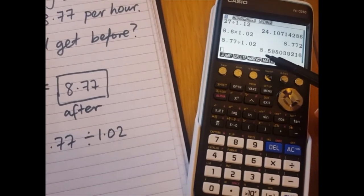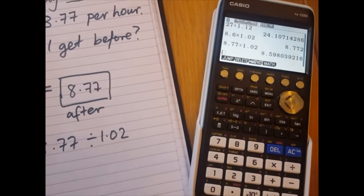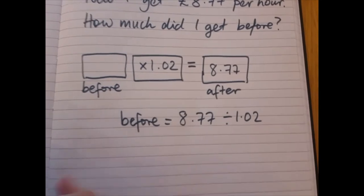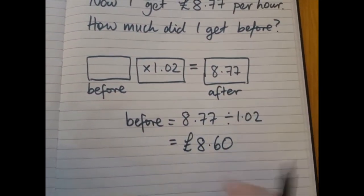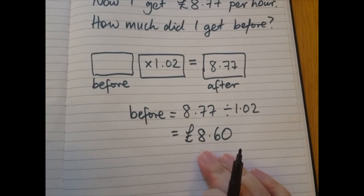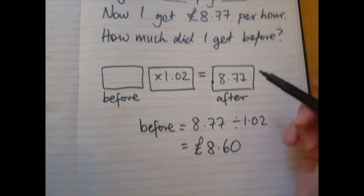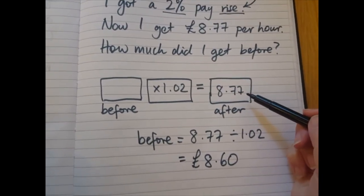There we are. 8.598. That's going to round to £8.60. So this was how much you got before the pay rise and then afterwards you can see it is higher. And we're done.